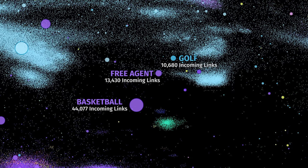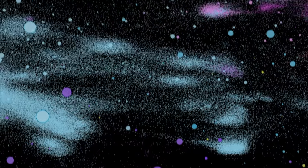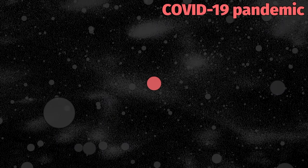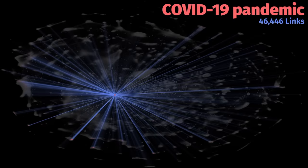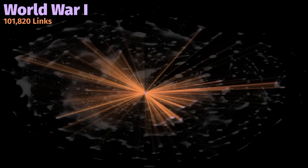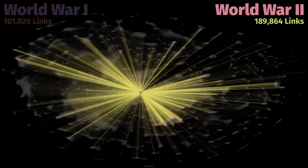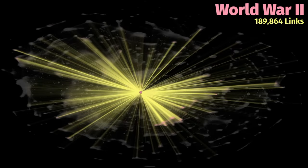Something interesting we can do with the graph is look at all of the links to a specific article to see how much of an impact it has on the overall graph. For example, the article for COVID-19 is one of the fastest growing and most linked-to articles, with over 46,000 articles referencing it. But it's still relatively small compared to the most referenced articles. Over 100,000 articles link to World War I, and even that is significantly less than the 189,000 articles that link to World War II. I find it interesting how the graphs for WWI and WWII are similar, showing how articles with similar content also share similar links.